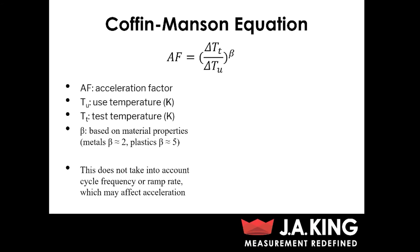Just like with climate aging, we do have an equation for your acceleration factor for climate cycling as well, though it's a little different. AF still stands for your acceleration factor; you've still got both your use and test temperatures. But now we've got a beta value, which is based on material properties. A good way to determine the exact value is experimentally, but we do have some guidelines: if you're performing testing on metals, typically we use a beta value of approximately two, and for plastics our beta values are going to be around five. Keep in mind that this equation is not going to take into account your cycle frequency or your ramp rate, which could affect your acceleration factor. So it isn't a perfect equation, but it is a good starting point.